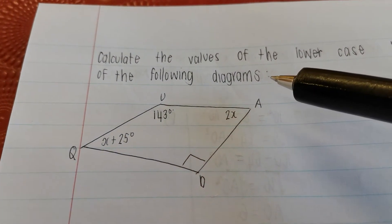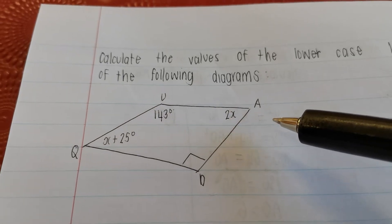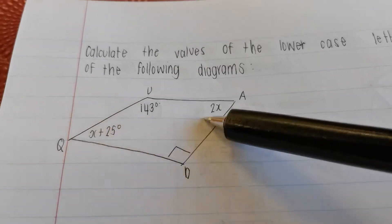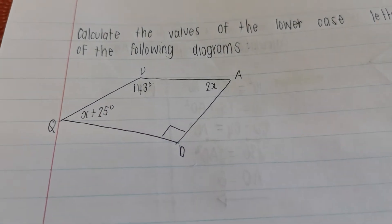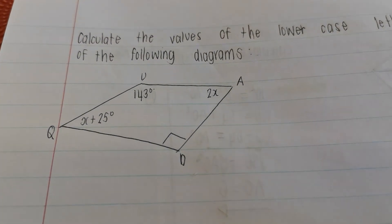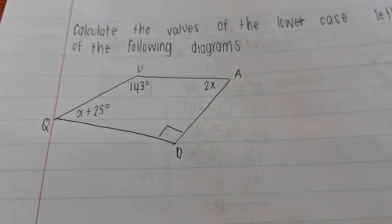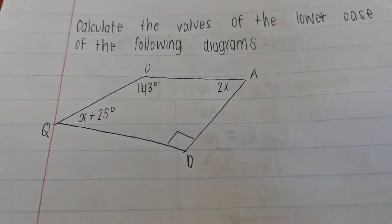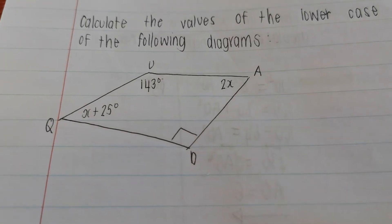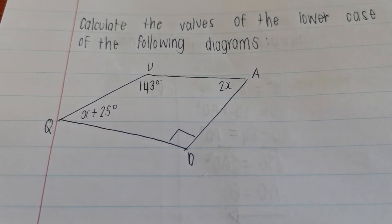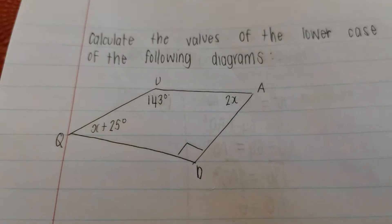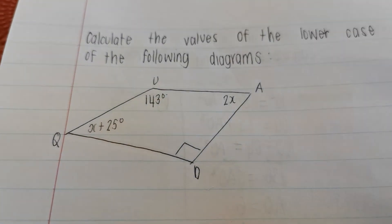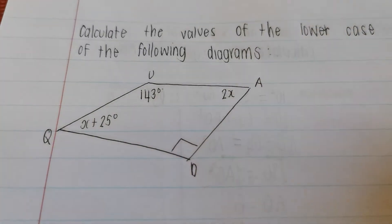This shape over here is a quadrilateral. There's nothing given to us that the sides are equal or parallel, so we can't classify it as a rhombus, parallelogram, kite, trapezium, square, or rectangle. It's just one random quadrilateral. Because it's a quadrilateral, that's the only thing we know.